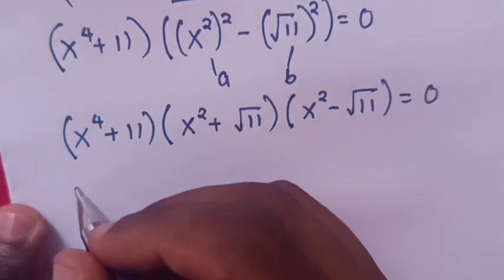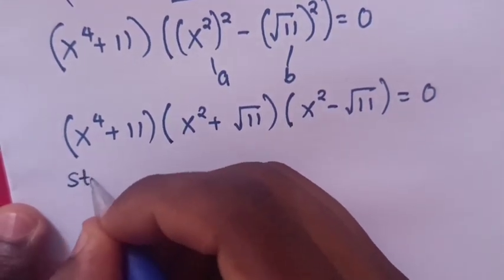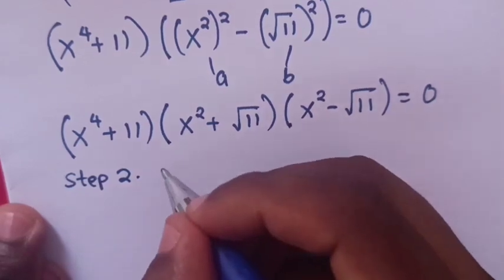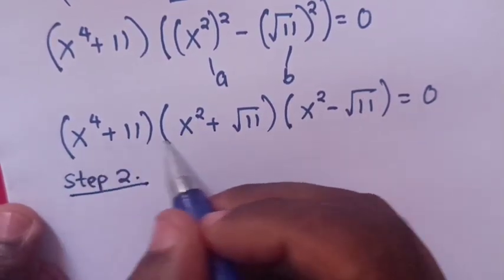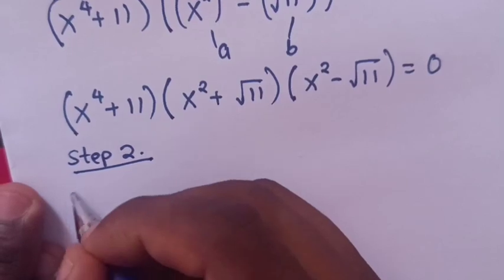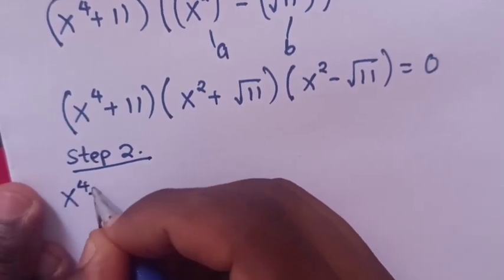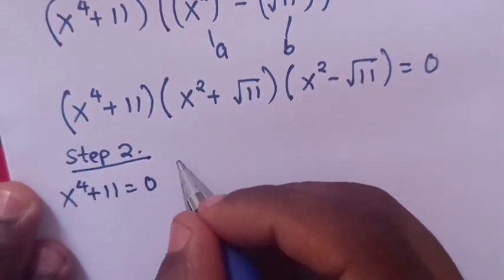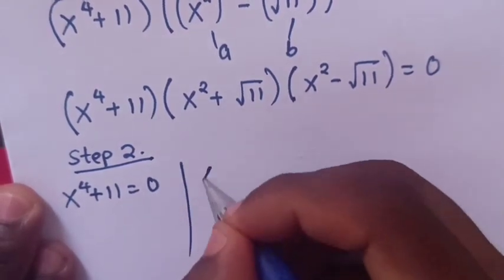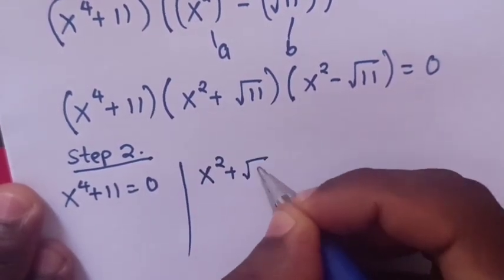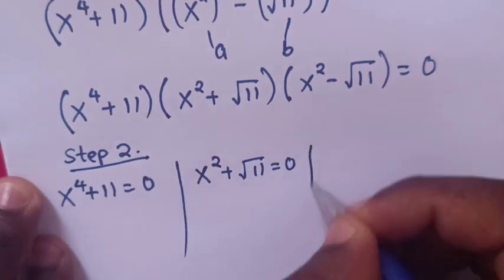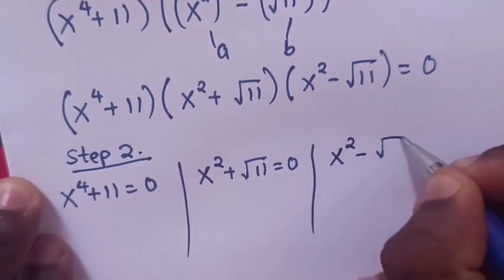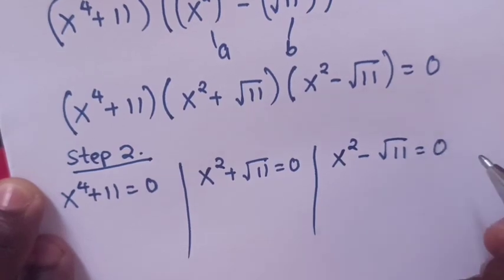Step 2. We solve for x from three equations: x power 4 plus 11 equals 0, x squared plus square root of 11 equals 0, and x squared minus square root of 11 equals 0.